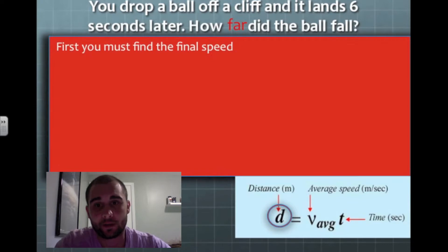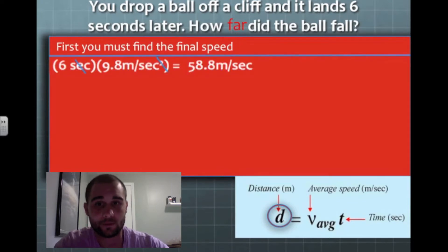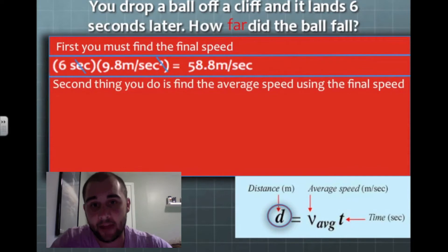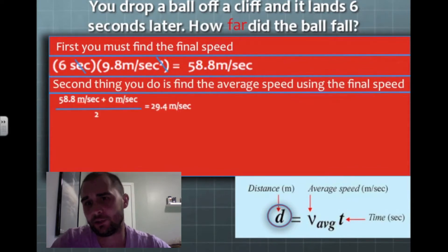First thing we're going to do is find our final speed. We've done that a few times now. So there it is, 58.8 meters per second. Now, I need to find the average speed next. So I'm going to take that and divide it by two and add the initial speed, which is zero. That's going to give me 29.4 meters per second.